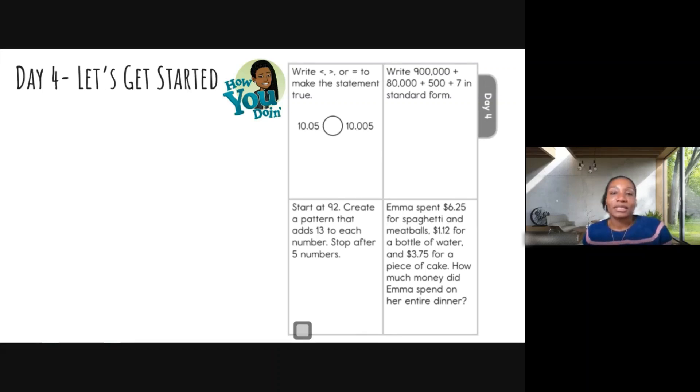Question number one says, write less than, greater than, or equal to to make the statement true. Look at these numbers. We are dealing with decimals. The best way to compare decimals is to line them up. So we have 10 and five hundredths and then we have 10 and five thousandths. I'm going to go over here. Let's write these numbers out.